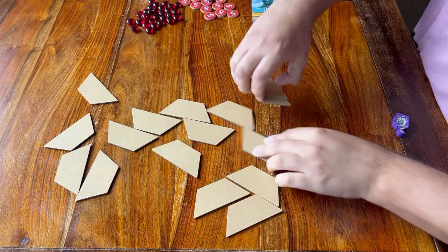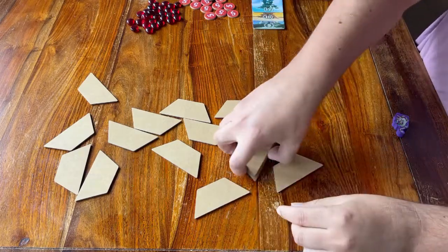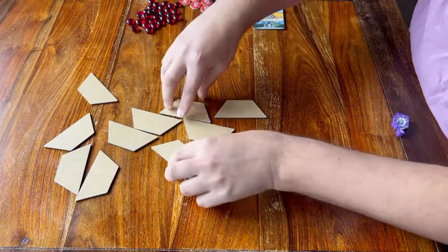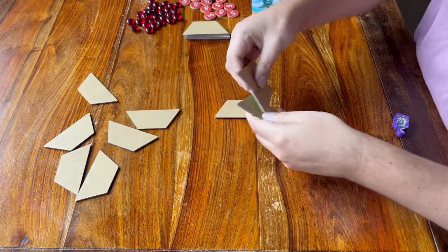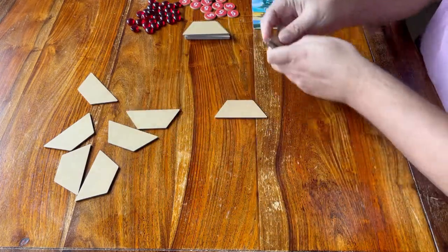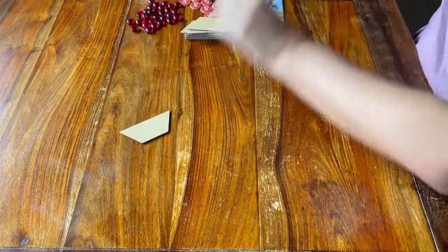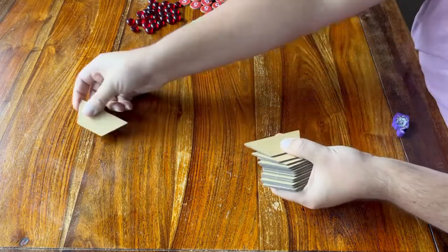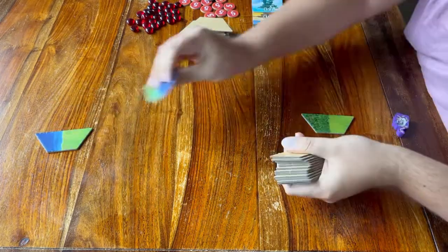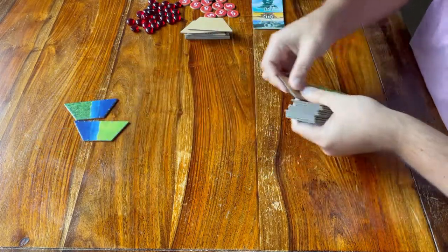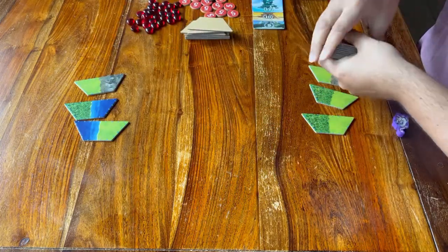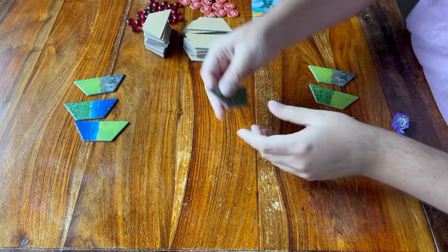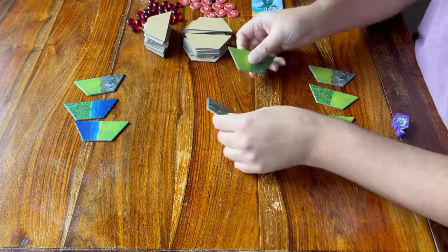When you're ready, start stacking them up. It doesn't matter how many stacks you make. Finish it by dealing three of these tiles face up to each player. Everyone gets three. And then put out three face up tiles by the stack, that is the market.